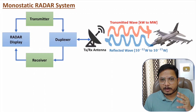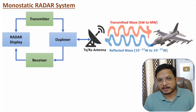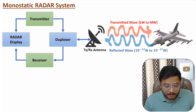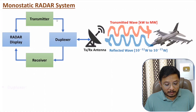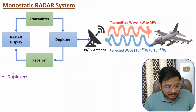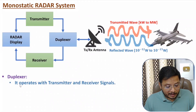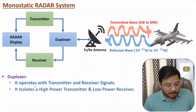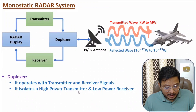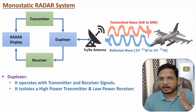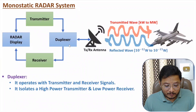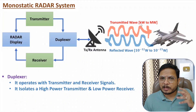The duplexer separates the high power transmitted signal and the low power reflected received signal. By comparing both of these waves at the display, we will be tracking the object. With the monostatic radar system we have the additional component — the duplexer — which operates between transmitter and receiver. The main role of the duplexer is to isolate the high power transmitter and the low power receiver.